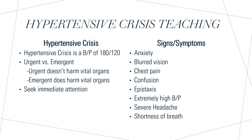Hypertensive crisis teaching: what is hypertensive crisis? Hypertensive crisis occurs when the blood pressure is significantly increased with a systolic pressure of 180 and a diastolic of 120, or has exceeded 180 over 120. It can lead to damage of blood vessels and potentially a stroke. According to Mayo Clinic, there are two classifications: urgent, which does not harm any vital organs, and emergent, which does damage vital organs. Signs and symptoms include blurred vision, chest pain, epistaxis (nosebleed), extremely high blood pressure, or severe headache — seek immediate medical attention.